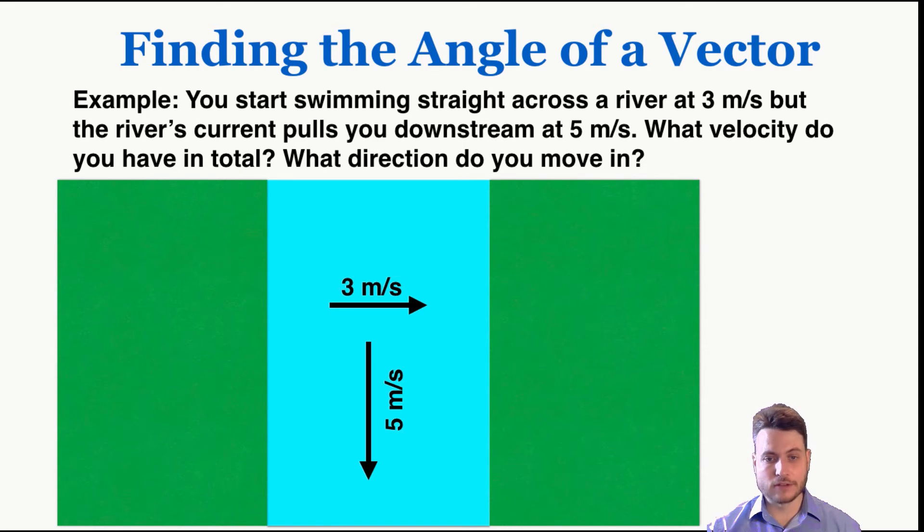So adding these two vectors together, I can use the tip-to-tail method, connect that new total vector, and I get 5.8 meters per second using the Pythagorean theorem. And when I solve for this angle, I get 59 degrees.